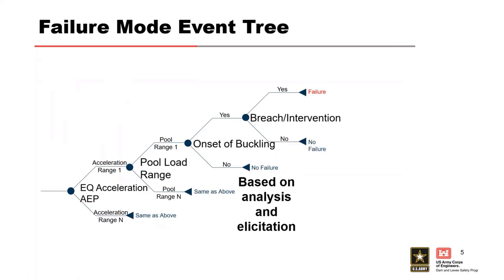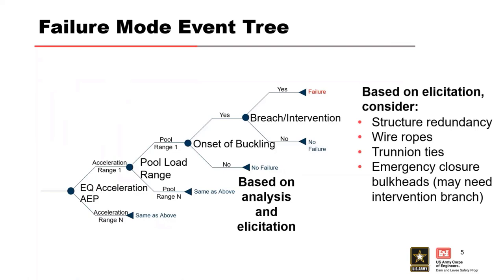This is based on analysis, looking at a fragility curve, and the team discussing and deciding a probability of this event occurring. Then we look at breach — is there a breach of the reservoir or is intervention possible? Intervention may be possible due to structural redundancy; maybe a gate arm has three or four strut arms with redistribution of stress, wire ropes, or an emergency closure bulkhead that can be set under flowing water.